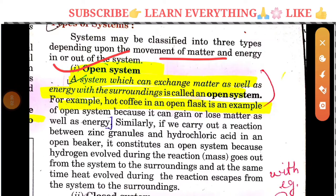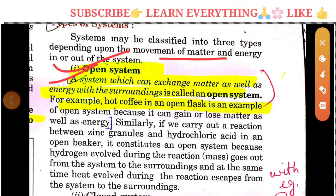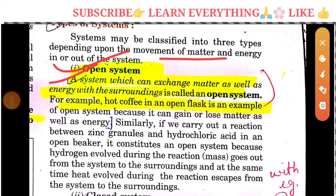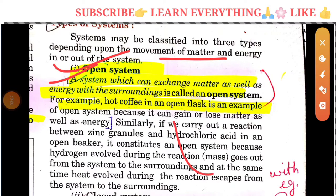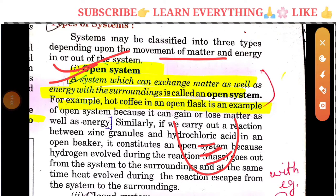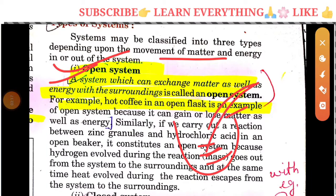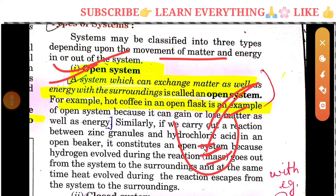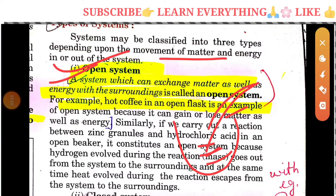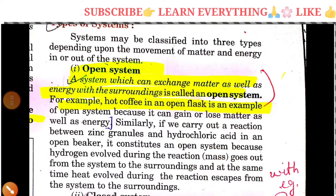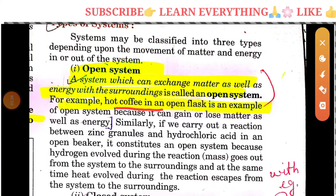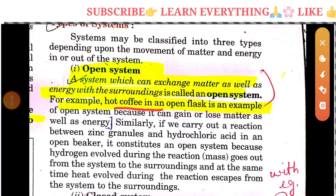An open system is a system which can exchange both matter as well as energy with the surroundings. For example, hot coffee in an open flask is an example of an open system, because it can gain or lose matter as well as energy. Heat always flows from high temperature to low, so water will also evaporate.